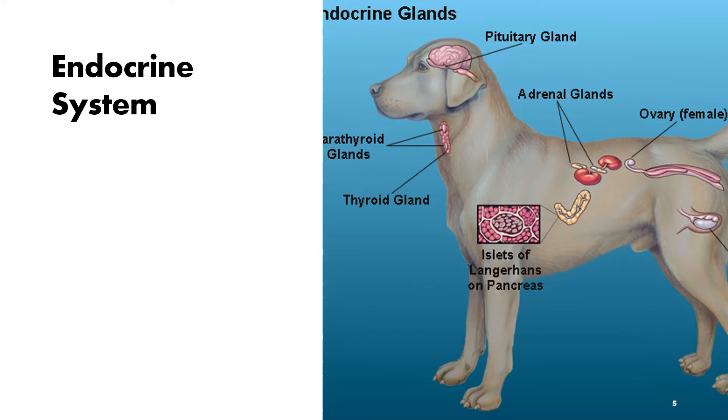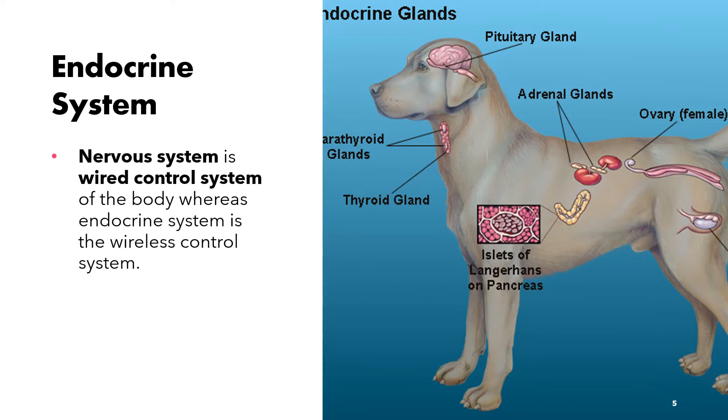When we compare the endocrine system with the nervous system, the nervous system is considered to be a wired control system of the body, whereas the endocrine system is the wireless control system of the body.